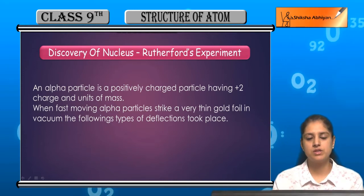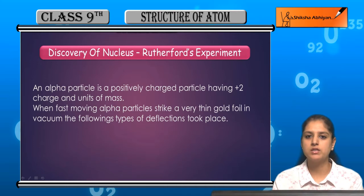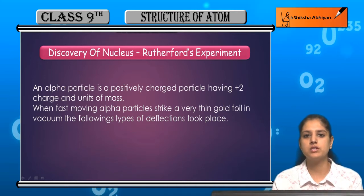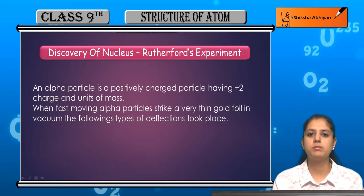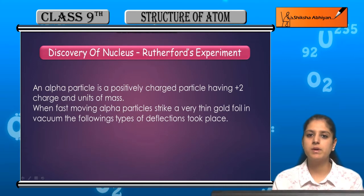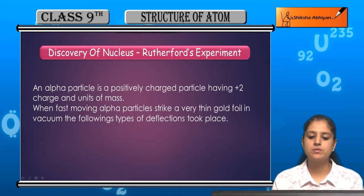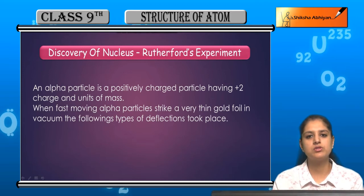He used alpha particles that have a positive charge with magnitude +2 and unit mass. In this experiment, fast-moving alpha particles were directed to strike a very thin gold foil in vacuum.